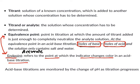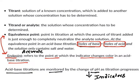In acid-base titrations, the titrations are monitored by the change of pH as the titration progresses. The change of pH can be visibly determined by using indicators. Indicators will show different colors when the pH is changed.